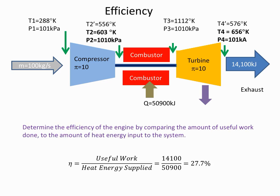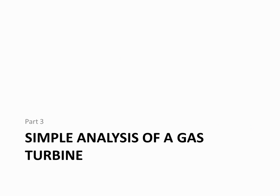Looking at the efficiency of the engine: we got 14,100 kilojoules of useful work out and supplied 50,900 kilojoules of fuel energy, so the overall efficiency is 27.7 percent. You may recall in the earlier video it was 48.8 percent when we had 100 percent efficiency at the compressor and turbine — it has now dropped significantly just by dropping the efficiencies from 100 to 85 percent. We'll then move on to part three, which will be calculating the thrust, in a different video.